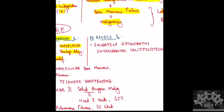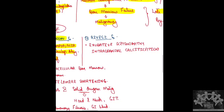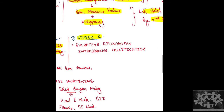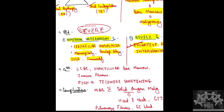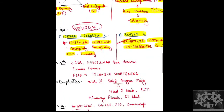Another close differential or severe subtype is Revesz syndrome. The characteristic finding here is exudative retinopathy along with intracranial calcification. The specific feature to diagnose Revesz syndrome is exudative retinopathy with intracranial calcification, while Hoyeraal-Hreidarsson syndrome is distinguished by cerebellar hypoplasia.